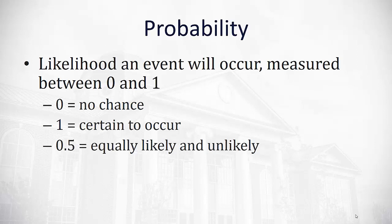For example, 0.5 would be equally likely and unlikely to occur. The way we calculate a probability is we divide the frequency of an event that we prefer by the number of possible events.